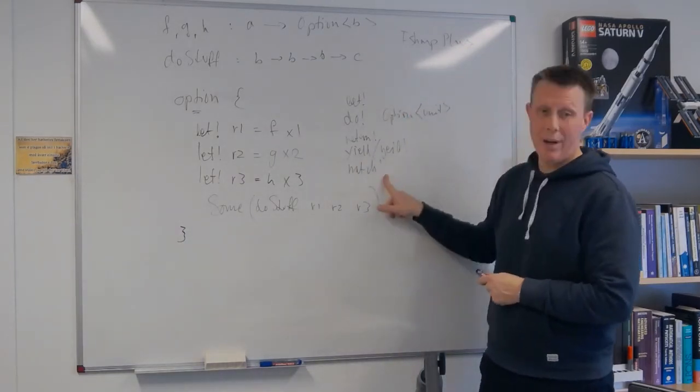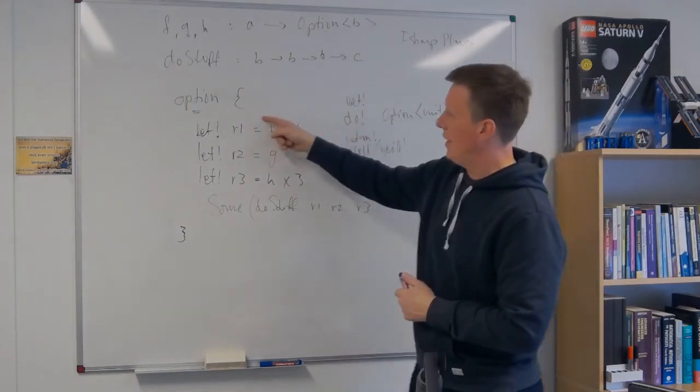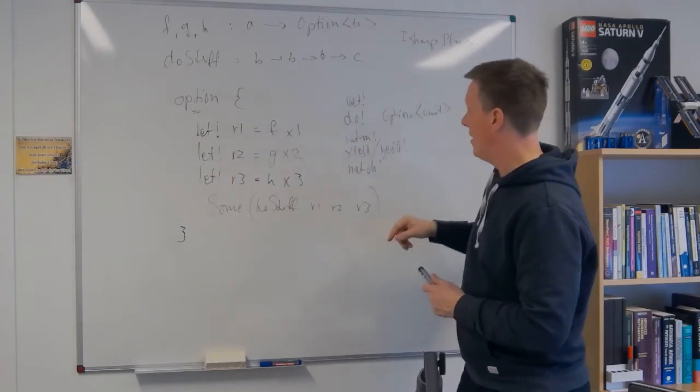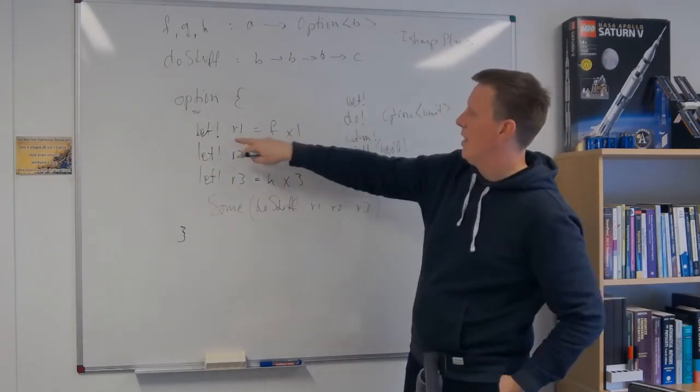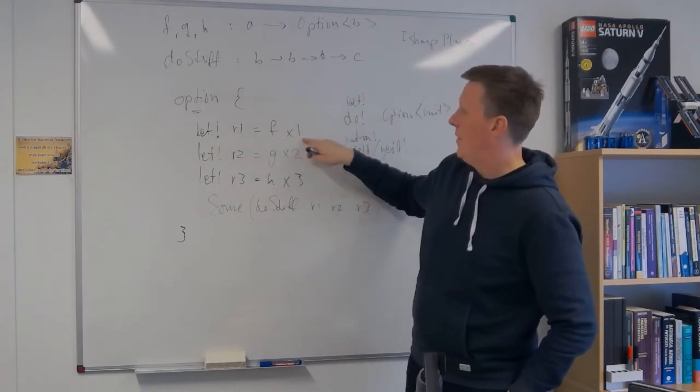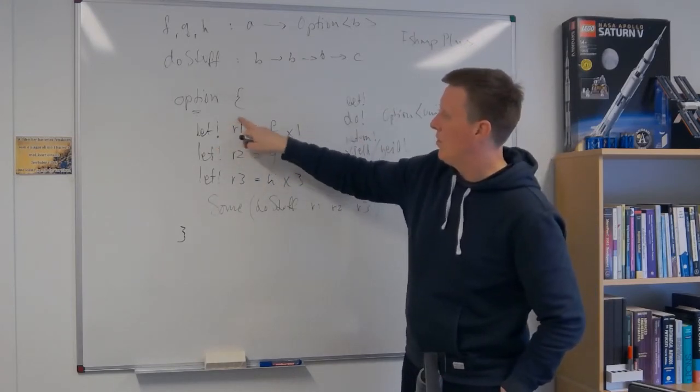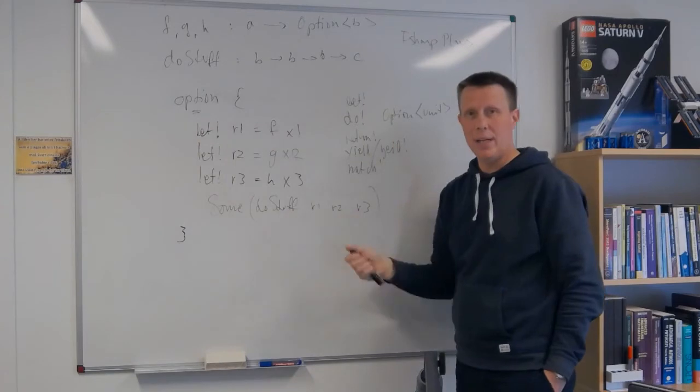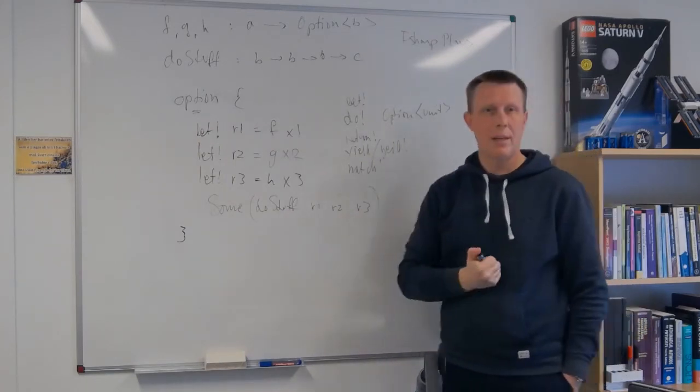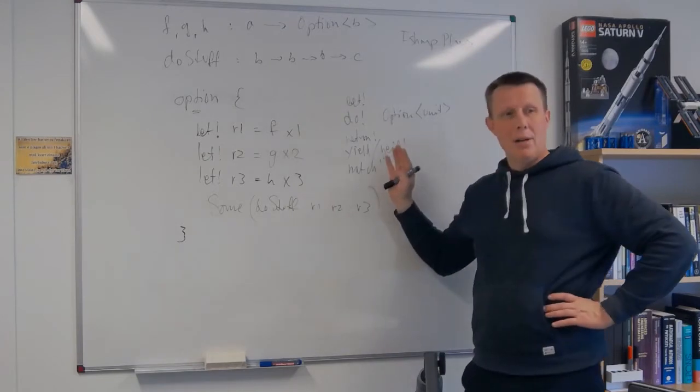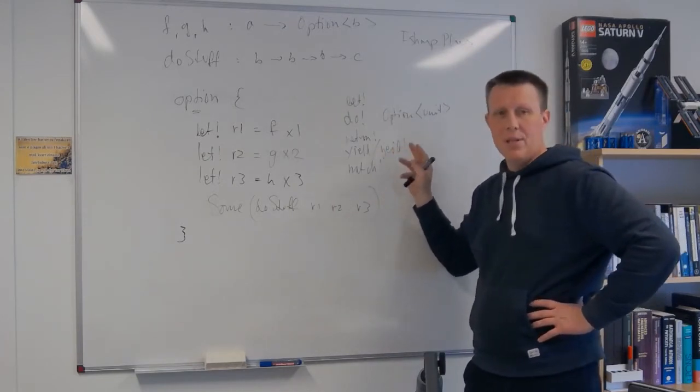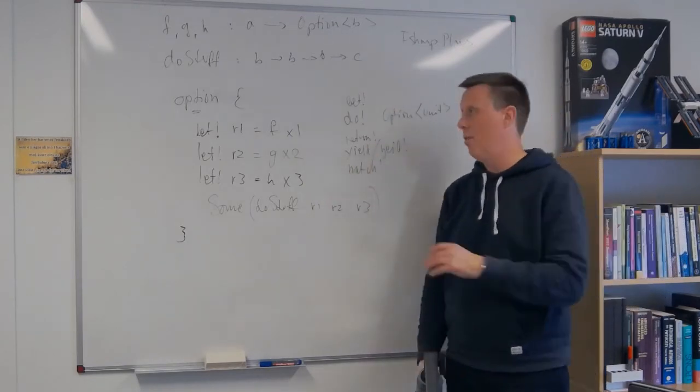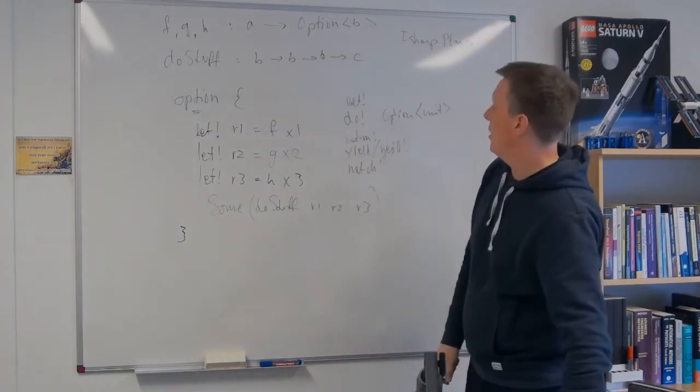Match bang is great because if you need to do pattern matching inside of a computation expression like this. Typically what you would end up doing is something like let bang this thing to get the result, and then you would match on the result. But match bang lets you match directly without binding the name. So it's a very clever, clever little convenient keyword. And if you go to the Microsoft reference, F sharp reference, you can find a very nice description of all the possibilities you can do with these computation expressions and what you can implement.